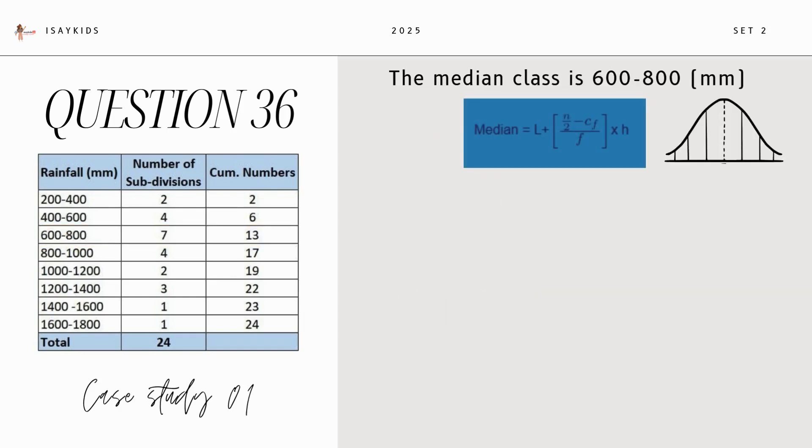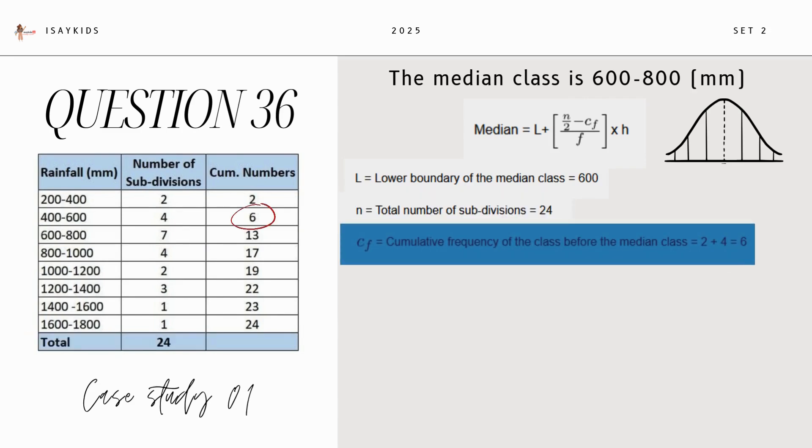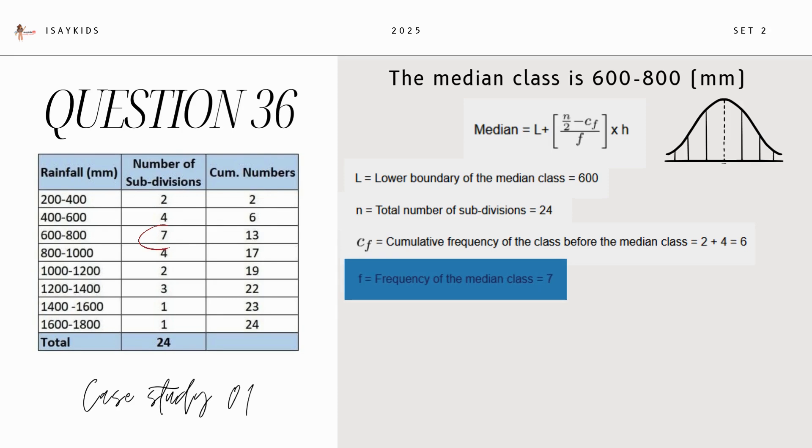Now, median is given by L plus N by 2 minus Cf upon F times H. Where L is the lower boundary of the median class, so it will be 600. N is total number of divisions which is 24. Cf is the cumulative frequency before the median class, so it will be 6. F is the frequency of the median class, 7. H is class width, so 200.